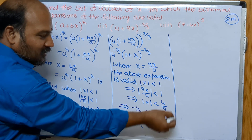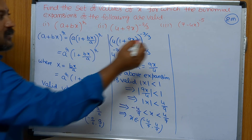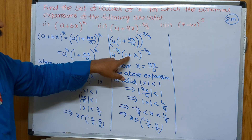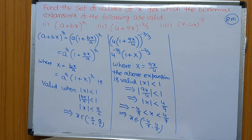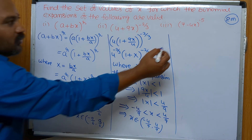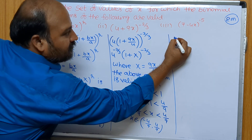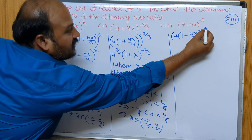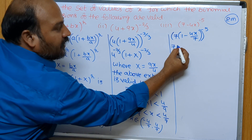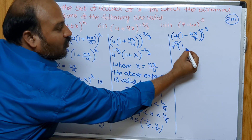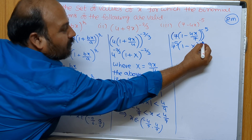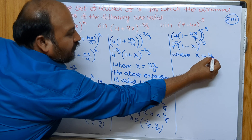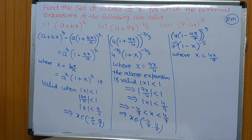Now observe carefully the third question. First, this expansion you need to keep in the form of (1 + x)^n. Taking 7 common: 7 × (1 − 4x/7)^(−5), which can be written as 7^(−5) into (1 − X)^(−5) where capital X equals 4x/7. The above expansion is valid when mod X is less than 1.